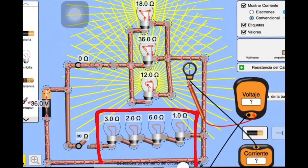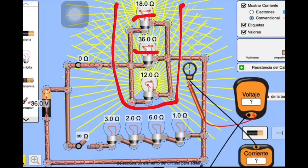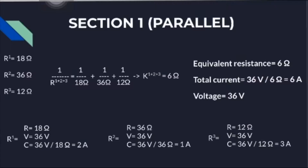First we are analyzing the parallel section. It is composed by three resistances: the first one of 18 ohms, the second one of 36 ohms, and the third one of 12 ohms. For each resistance, the voltage is going to maintain constant.